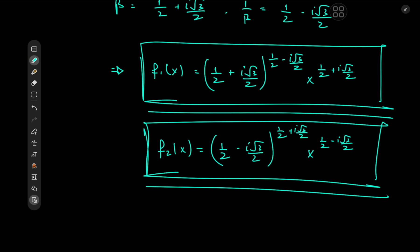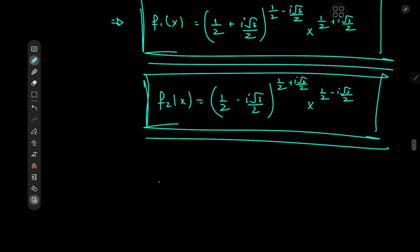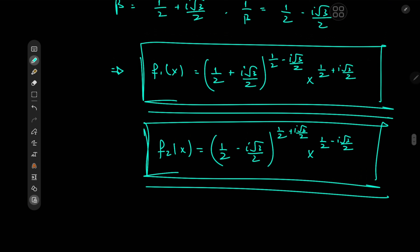There is one thing to address here. Because we have complex power functions of the form z to the alpha, where both z and alpha are complex numbers, this is a multi-valued function, which of course isn't continuous. So technically speaking, our solutions are stated in terms of the principal branch of the complex power functions involved. There may be other solutions corresponding to other branches of the power function.